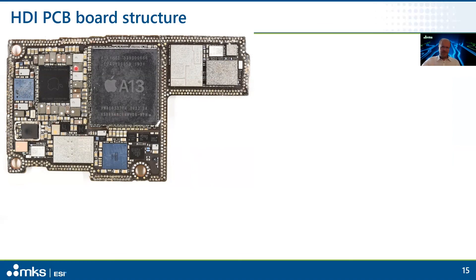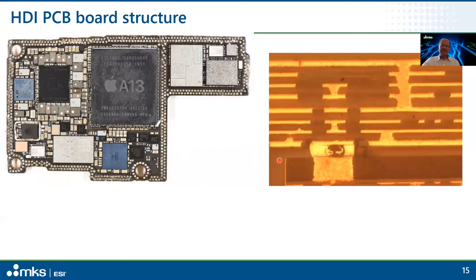There's no space on the surface for all of those connections to happen. If you use a saw and cut straight through, you'd find inside a very complicated layer of copper wires. Typically these are 14, 16, even 18 or more layers these days to create the connectivity needed for all of those components.